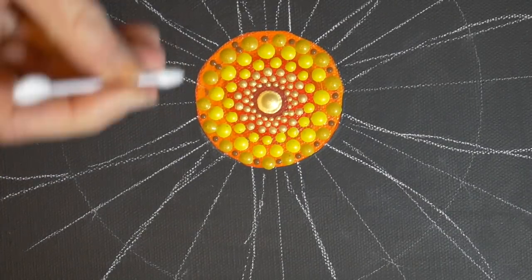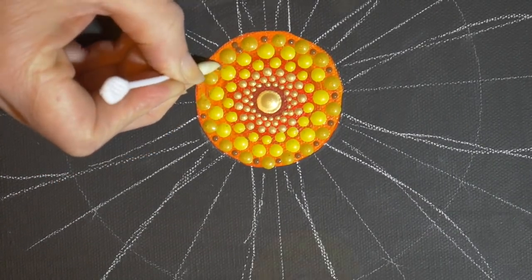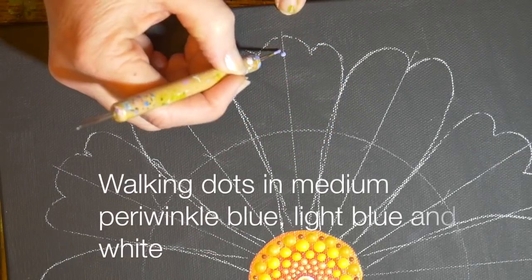Then I went back with the q-tip and wiped those off before they dried and replaced them with one. I wanted to get started on the petals here and I decided that I would just start walking some dots at the end.